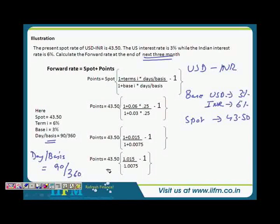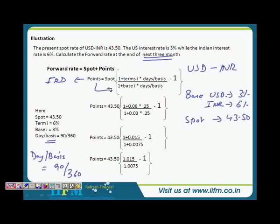Theoretically, if the spot rate today is 43.50, what would be the perfect forward rate 3 months down the line? A perfect forward rate would be 43.50 plus whatever the interest rate differential is. How do we calculate that? Interest rate differential was points, and there was a formula which we discussed.